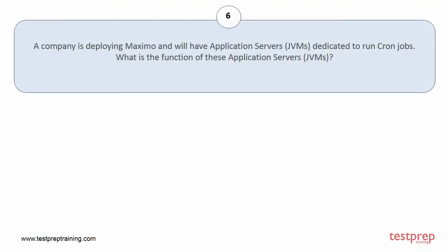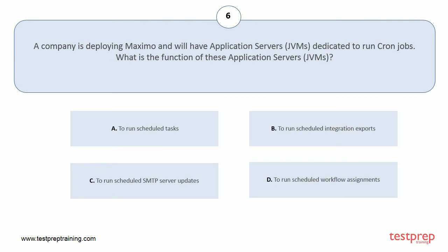Question number 6. A company is deploying Maximo and will have application servers dedicated to run cron jobs. What is the function of these application servers? Option A: To run scheduled tasks. Option B: To run scheduled integration exports. Option C: To run scheduled SMTP server updates. Option D: To run scheduled workflow assignments. The correct answer is option A.